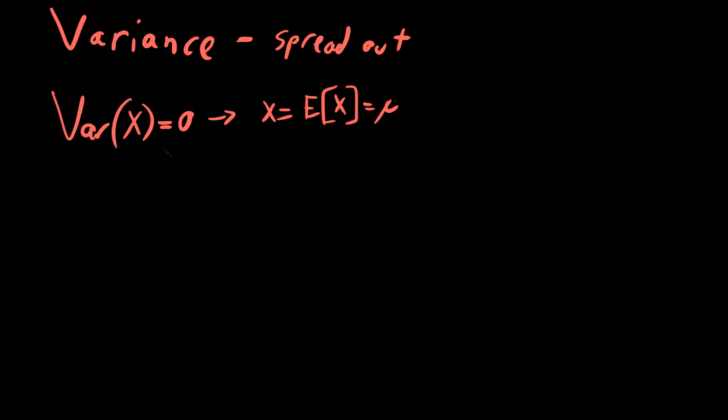what you really are very interested in is finding the dimensions in the random variables when you model them where the variance is large. Because when the variance is large, that means there's a lot of activity going on there. That's where the interesting change within the data is happening. And so variance is critical.